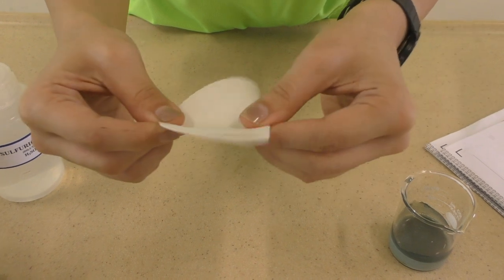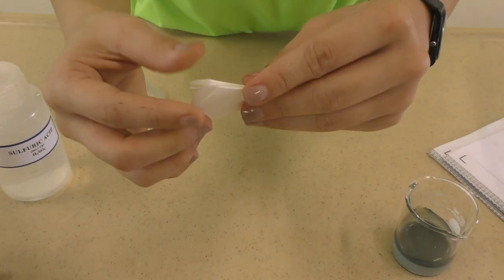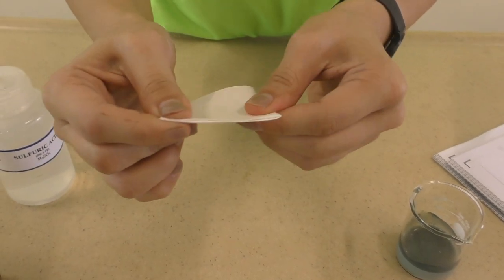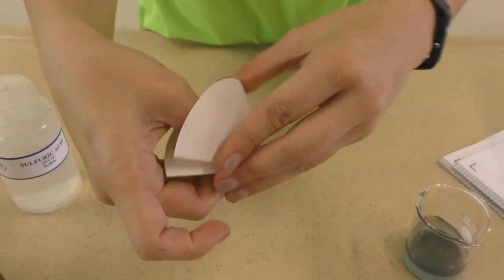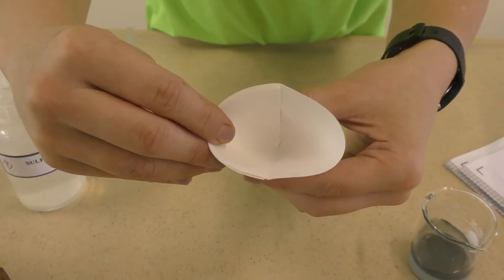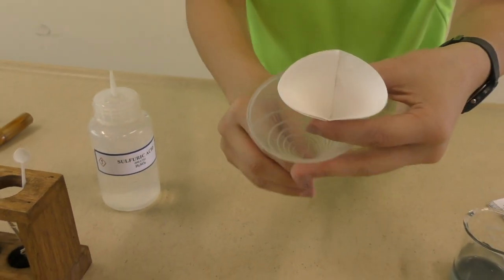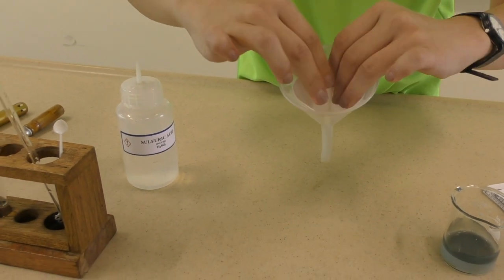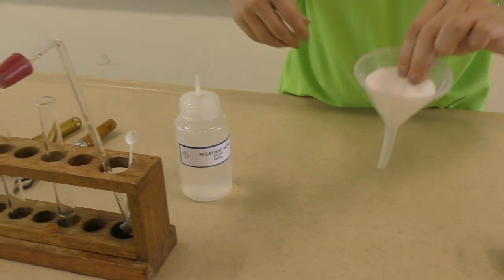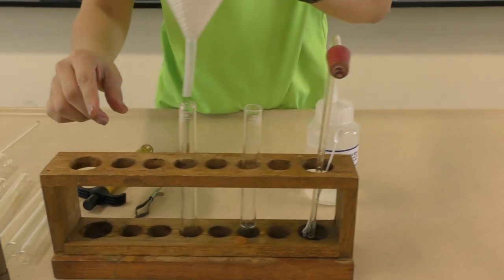Prepare the filter paper. Fold it into half, followed by another half to form quarters, and open one of the openings. Place the filter paper into the filter funnel. Once done, place it in the empty test tube.